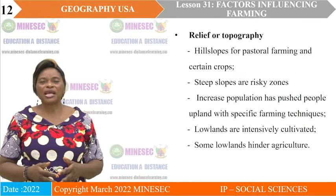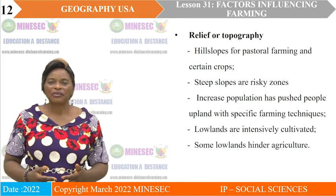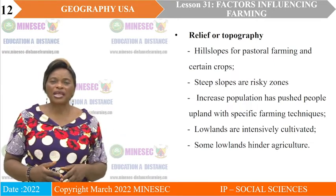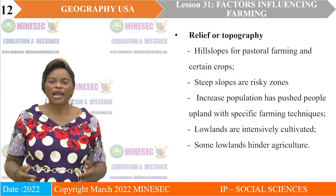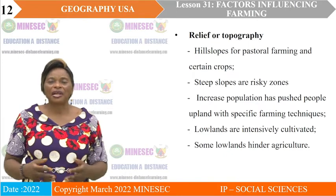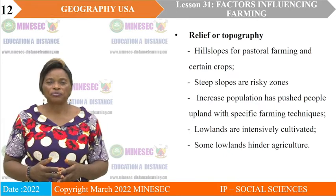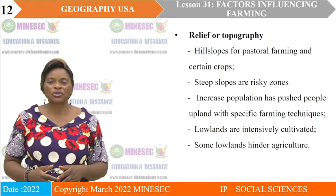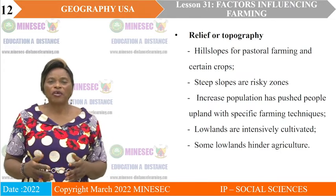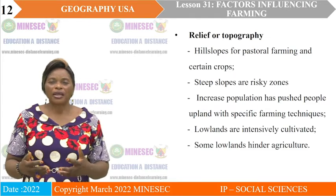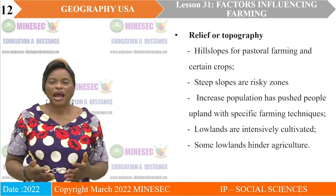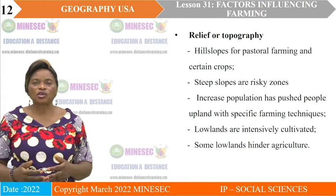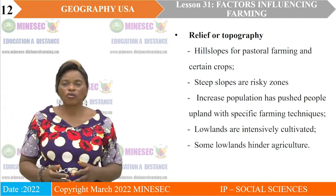Contrary to hilly areas, low-lying areas are intensively tilled. The soils washed down from hilly areas are deposited in low-lying areas, making them fertile and able to accommodate crop growth. Good examples are the Ndo plain and the Mbo plain, which are intensively tilled because of the good alluvial soil deposited on flood plains along rivers.